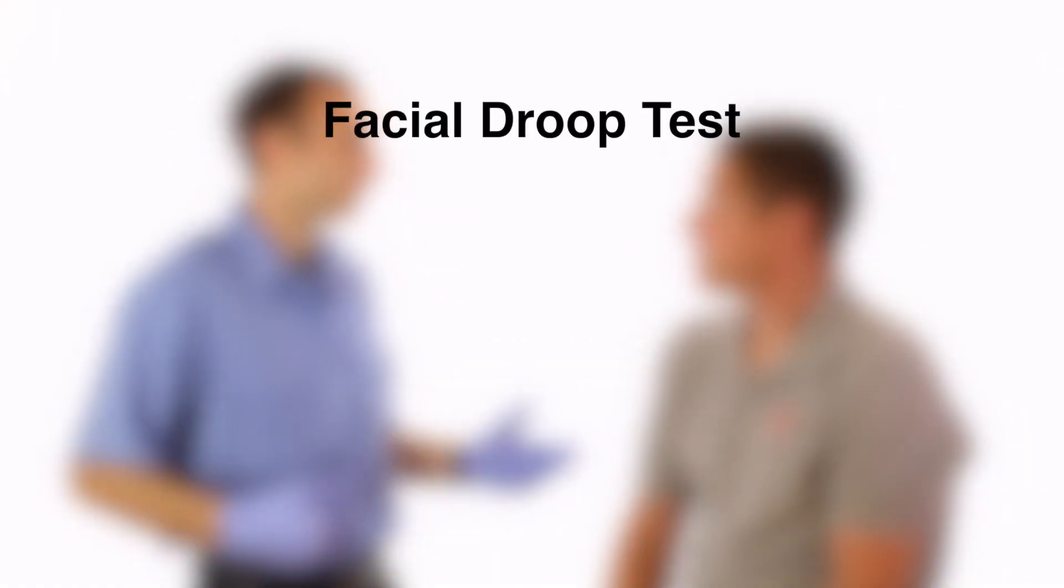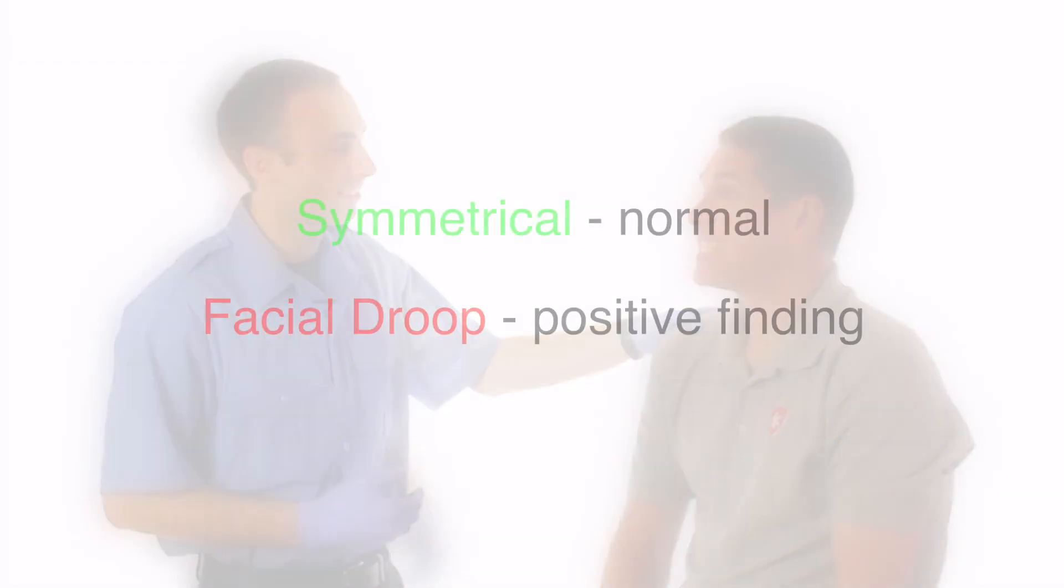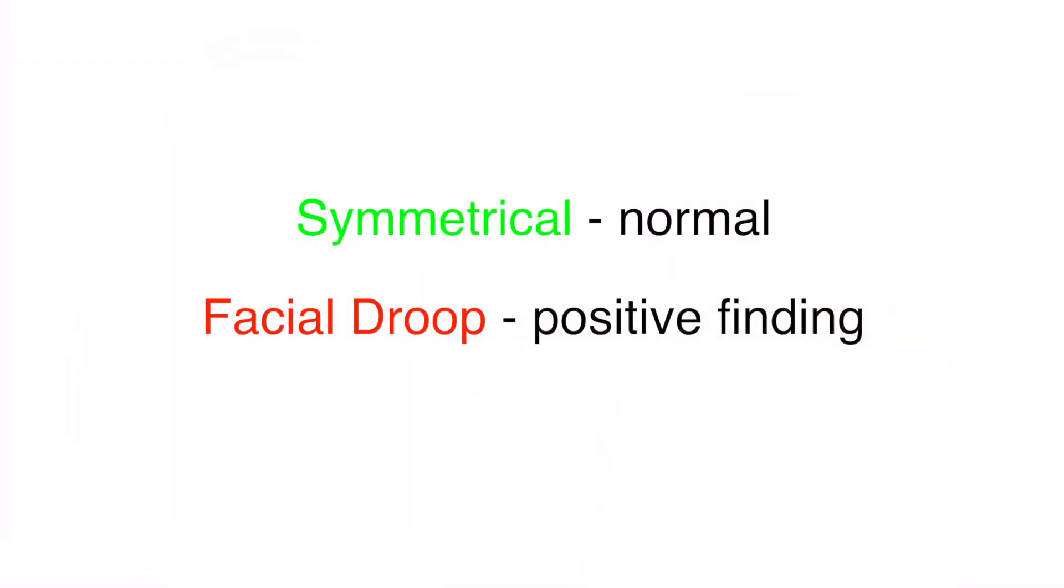Have the patient smile and show you their teeth. Sir, can you smile and show me your teeth? If both sides of the mouth are symmetrical, this is considered normal. If one side of the mouth drops, as demonstrated in this illustration, this is considered positive.